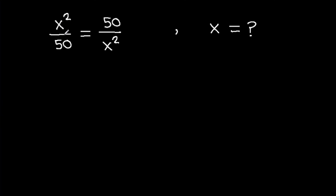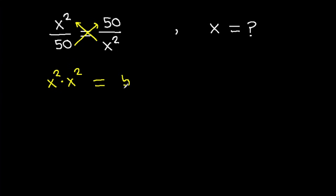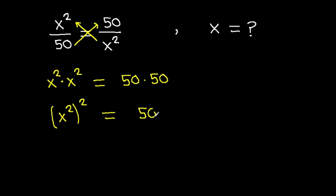We have x squared over 50 equals 50 over x squared. If we cross multiply, then x squared times x squared will be 50 times 50. And it is x to the power 4 equals 50 squared.